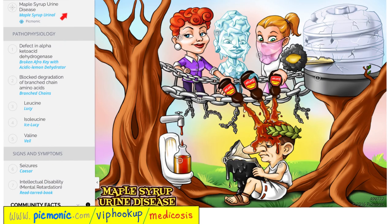Let's review maple syrup urine disease from Pycommonic. Maple syrup urine is depicted by the maple syrup urinal. There is a defect in alpha-ketoacid dehydrogenase — the broken afro-key with acidic lemon dehydrator. What's going to happen? You will not be able to degrade the three amino acids: leucine, isoleucine, and valine. Symptoms include seizures and intellectual disability (formerly mental retardation).